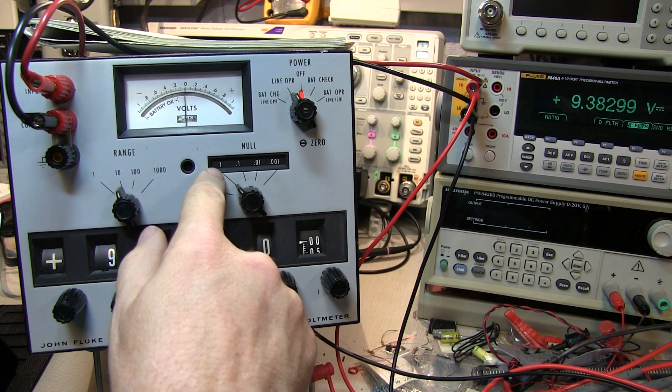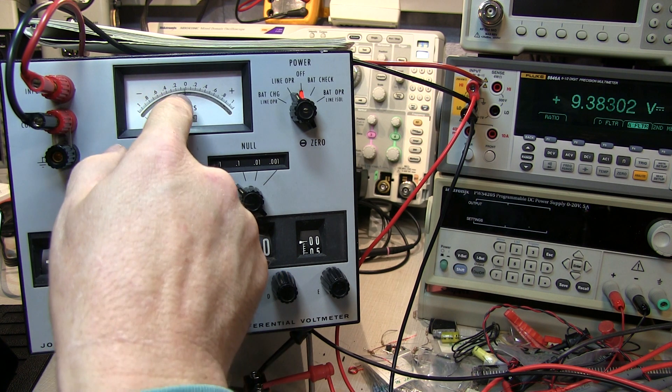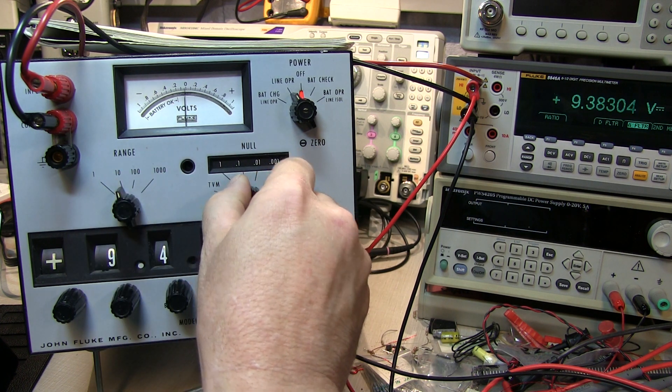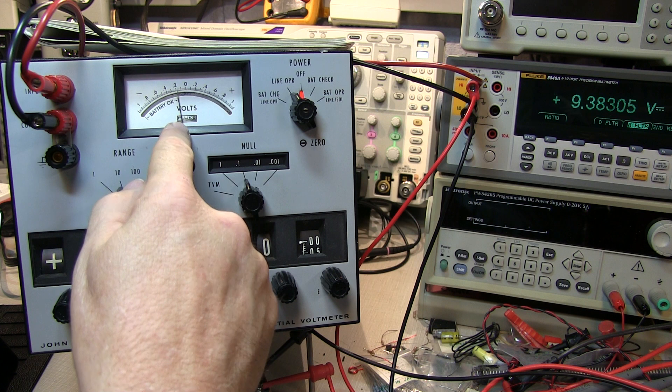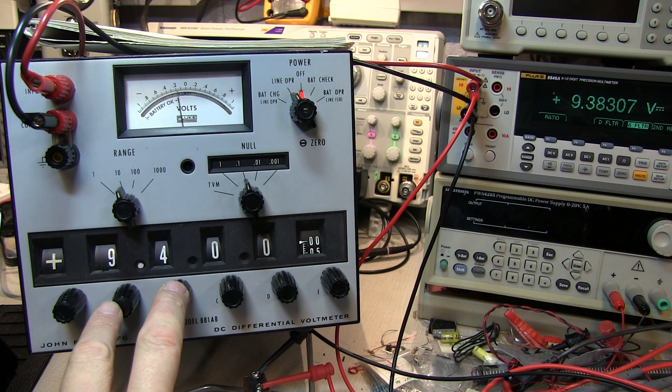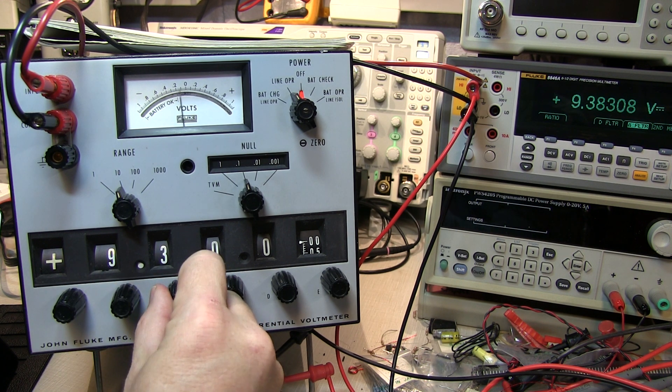This now brings our meter scale down to the same 10 volt scale but we can see we've got very little deflection here. We can now easily move ourselves to the next null range, getting a little more deflection here. Since the deflection is negative, that means I've got the divider voltage set up just a little bit high, so let's turn this back down to 3.